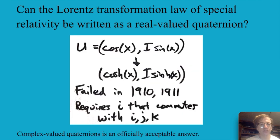And so the question comes up can the Lorentz transformation law of special relativity be written using real valued quaternions. So the first thing they did was they said well this unit quaternion that would be like cosine and i sine because when you square those guys up it'll work out to do the rotations. Well maybe we should just put in hyperbolic cosines and hyperbolic sines and that failed in 1910 I mean that's a long time ago. In 1911 somebody else found the same kind of failure.